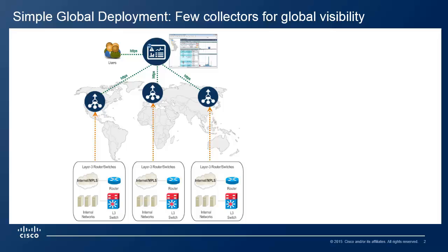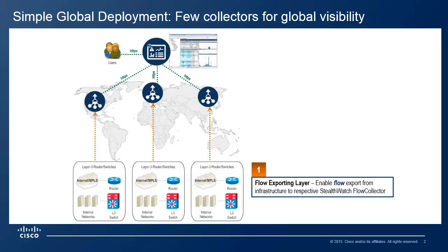StealthWatch is made up of three layers. Layer 1 is the flow exporting layer, which consists of routers, switches, and sensors within your network. This layer is basically turning your network into a sensor grid directly. Most modern routers, switches, firewalls, and other infrastructure components have the ability to export flow information to account for packets crossing that particular segment of the network.